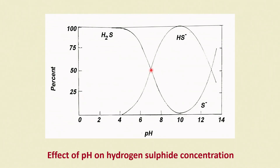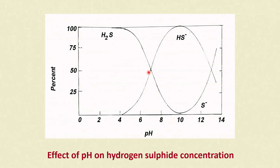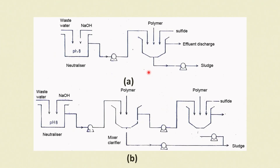If pH 10 is chosen, sulphide solubility is minimum but HS⁻ solubility is maximum — that is not desirable. The point where solubility of both sulphide and HS⁻ is at a minimum is the pH that must be chosen for treatment of sulphide-bearing wastes.